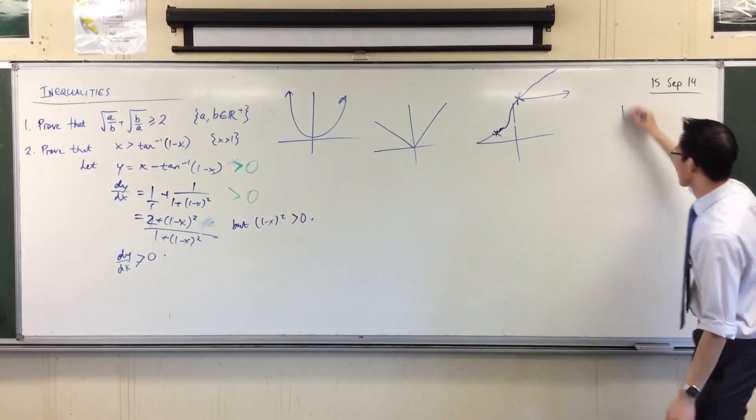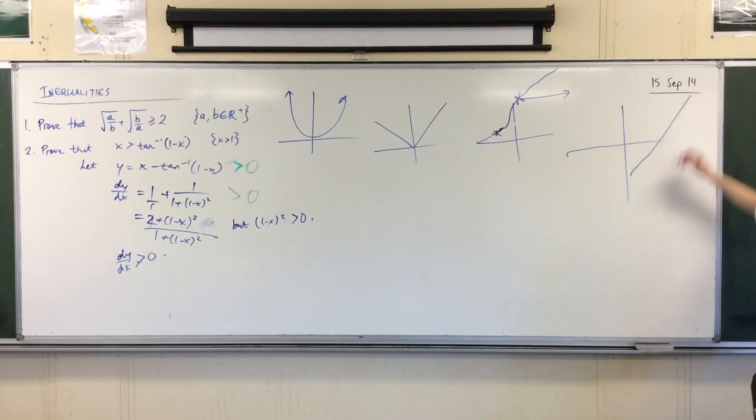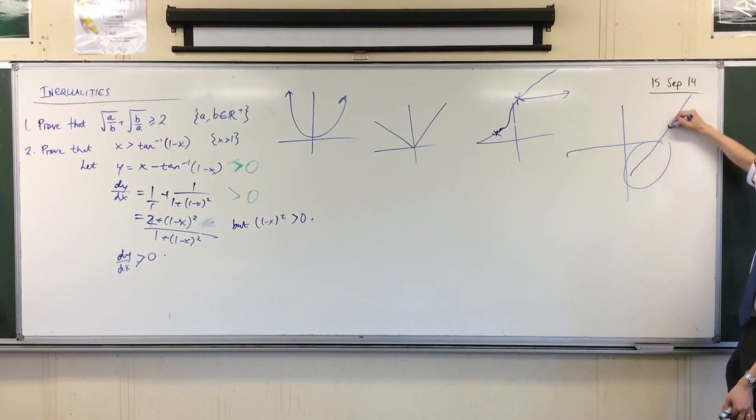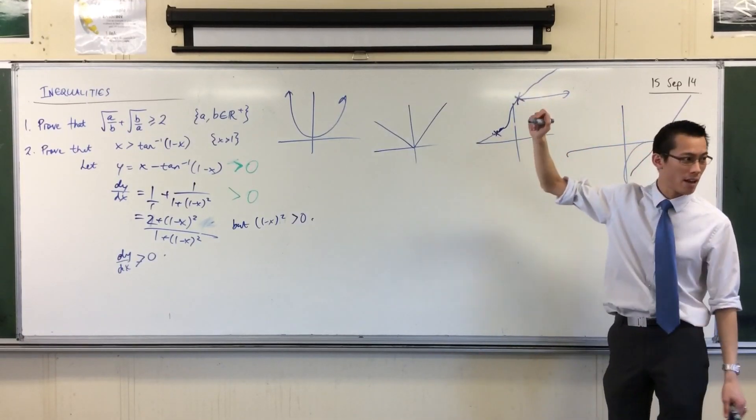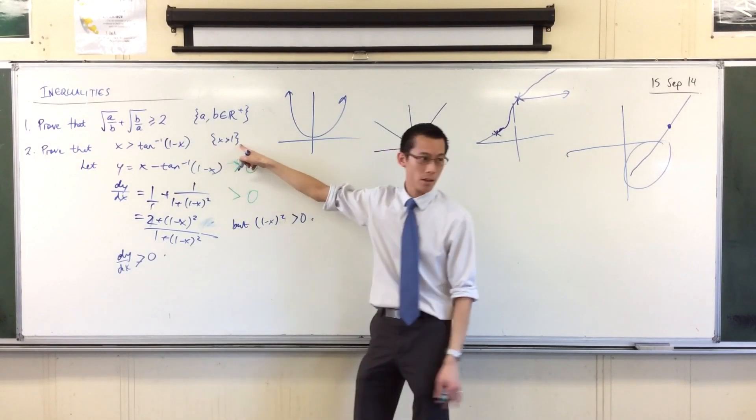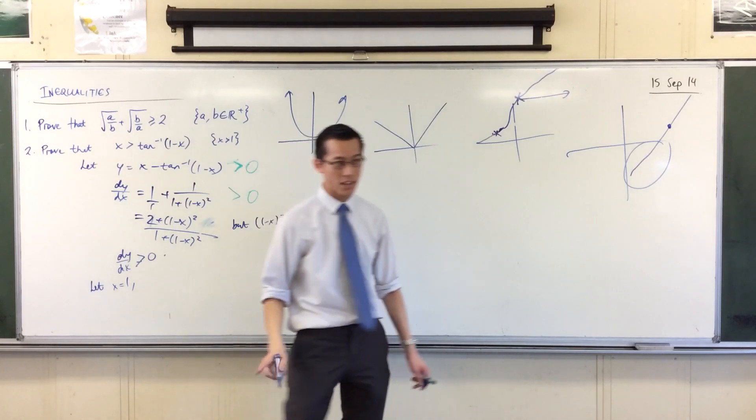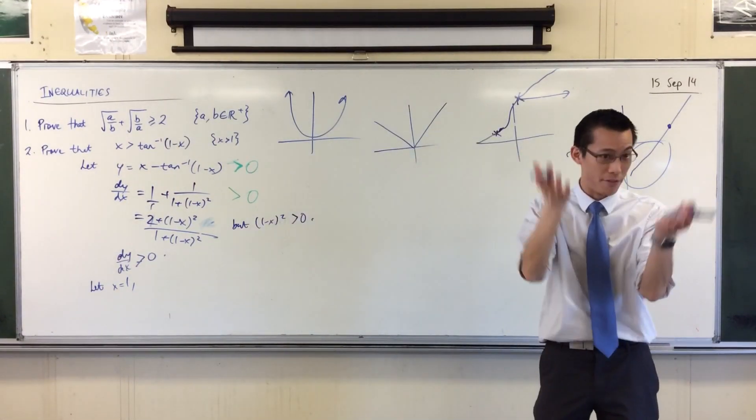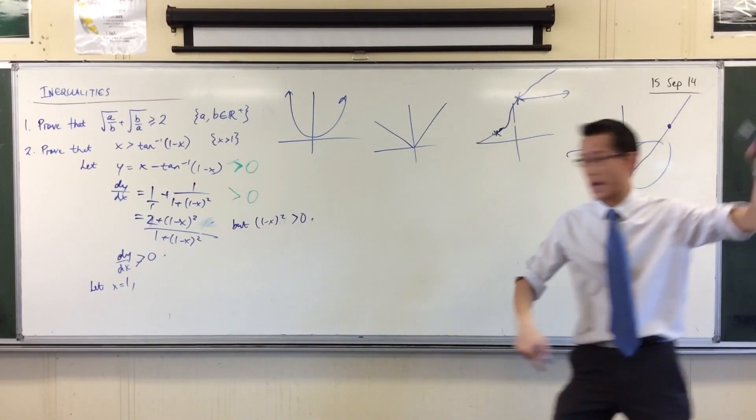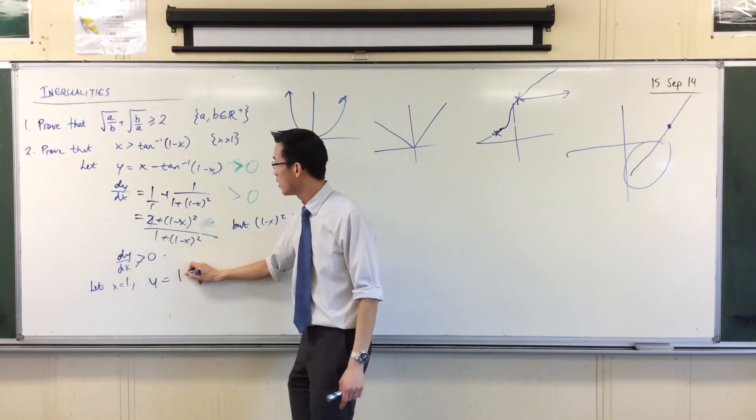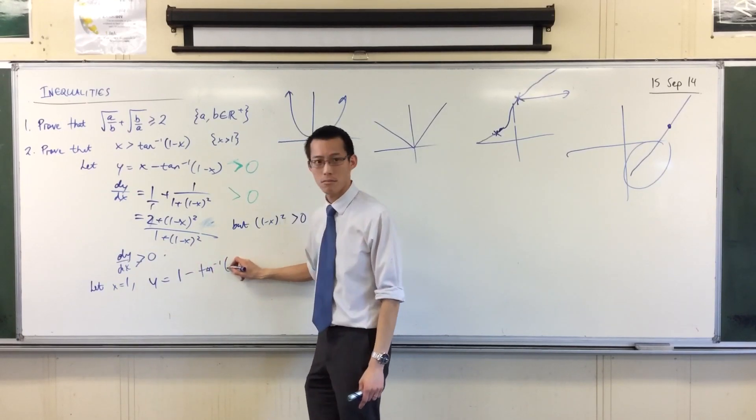Now, of course, increasing is not enough. Because if I have this, this is increasing, but look, it's got a whole chunk of it that's negative. So, what must I establish? I need some value. I need something like this, or something like this. And look at what our domain is. It's x is greater than one. So, if I take the boundary, if I can show that at that point, it's above the axis, and then it's just going to increase from there. It's never going to come back.